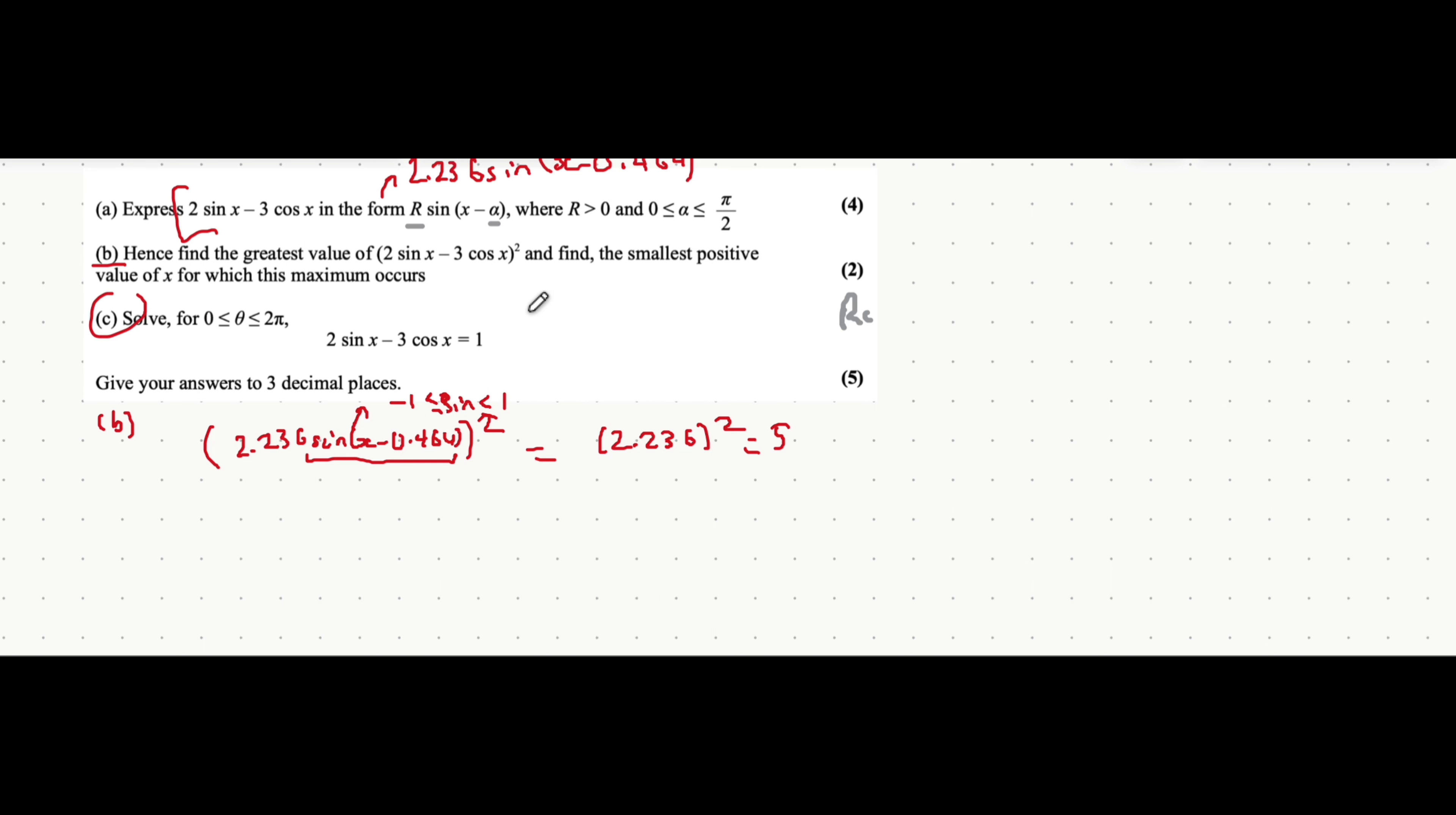Okay, so, oh sorry, it says find the smallest positive value of x for which this maximum occurs. So it occurs, like I mentioned, when it's equal to 1. So if we make sine of x minus 0.464, all equal to 1, we then do the inverse sine of both sides. So x minus 0.464 would be equal to the inverse sine of minus 1. Which on a calculator gives minus a half pi. Okay, you do have to be careful here though. If we look at the sine graph. Minus a half pi refers to this value here. Oh, I apologise. It's because I put in inverse sine of minus 1 and not inverse sine of positive 1. When you put inverse sine of positive 1, you'll get half pi. Sorry about that.